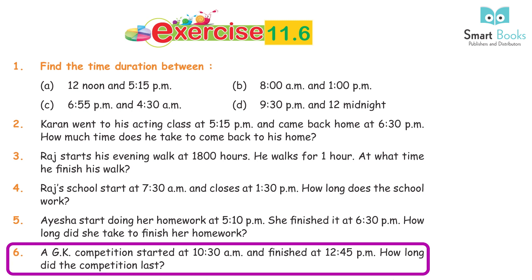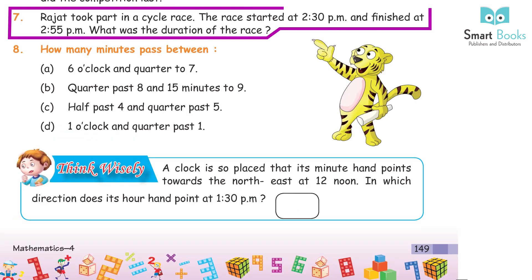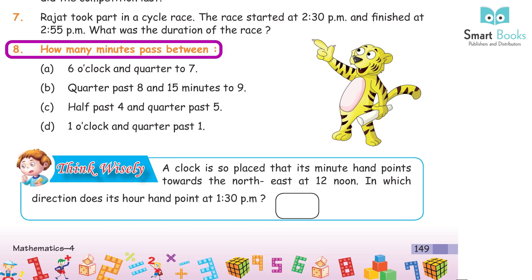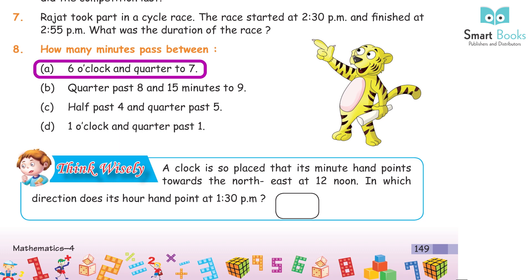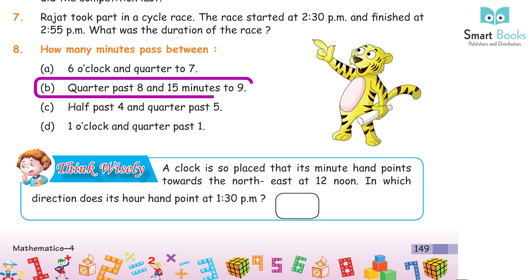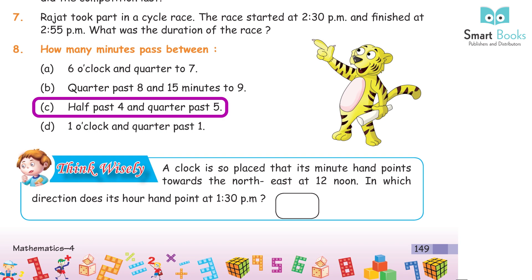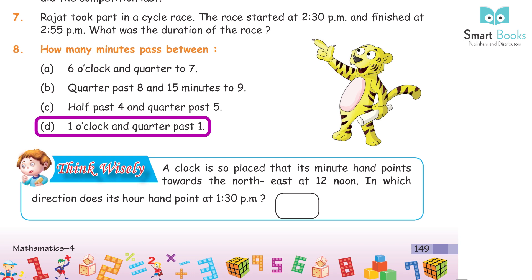Question 6: A GK competition started at 10:30 AM and finished at 12:45 PM. How long did it last? Answer: 2 hours 15 minutes. Question 7: Rajat took part in a cycle race starting at 2:30 PM and finishing at 2:55 PM. Duration: 25 minutes. Question 8: How many minutes passed between: A. 6 o'clock and quarter to 7 — 45 minutes. B. Quarter past 8 and 15 minutes to 9 — 30 minutes. C. Half past 4 and quarter past 5 — 45 minutes. D. 1 o'clock and quarter past 1 — 15 minutes.